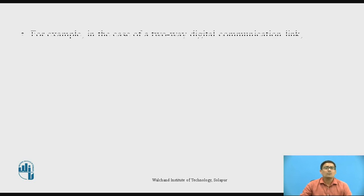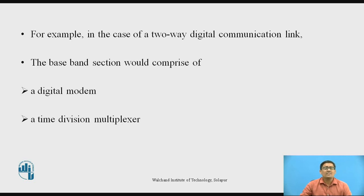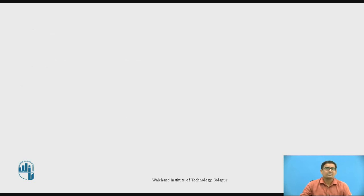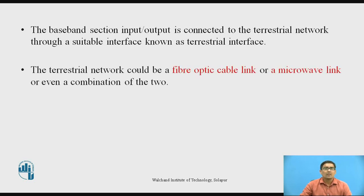For example, consider a two-way digital communication link. For that two-way digital communication link, the baseband section would comprise a digital modem, and here we use time division multiplex techniques. The baseband section input/output is connected to the terrestrial network through a suitable interface known as the terrestrial interface. The terrestrial network could be a fiber optic cable link, a microwave link, or a combination of these two.